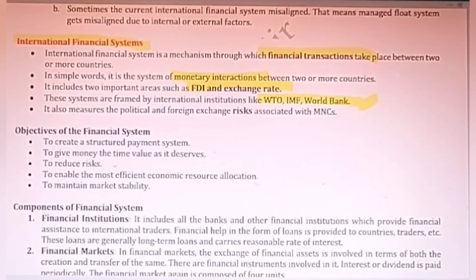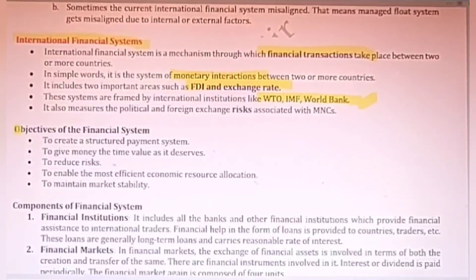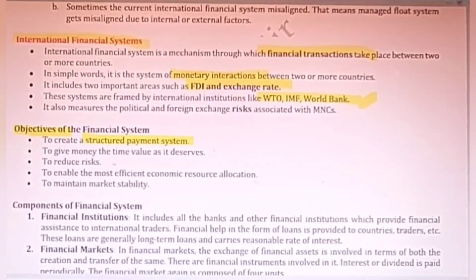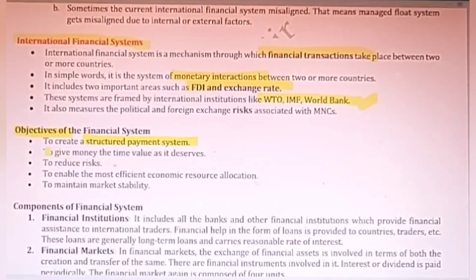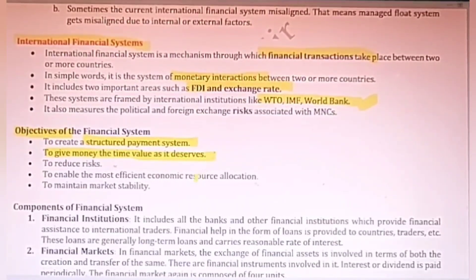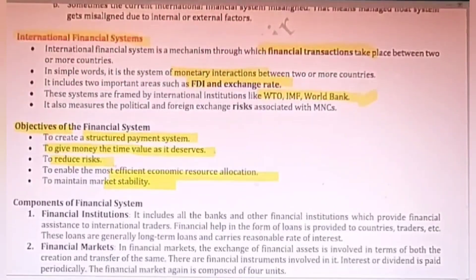These three important institutions look after international trade. The main objectives of this financial system were to create a structural payment system so that there are no disputes and there is uniformity in transactions, and to give money its value. It reduces the risk of transaction and translation exposure and enables the most efficient allocation of economic resources, maintaining stability throughout the world.